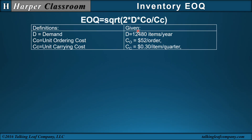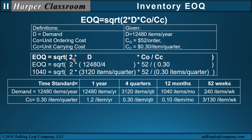For the EOQ equation, suppose we're given a demand of 12,480 items a year, an ordering cost of $52 per order, and a carrying cost of $0.30 per item per quarter. In the EOQ equation we have 2 times D times C sub O over C sub C. Notice our demand is in years but our carrying cost is in quarters — these two time units must be the same, so we transform years to quarters by dividing by 4. Taking 12,480 divided by 4 gives items per quarter. With ordering cost of $52 and carrying cost of $0.30 per item per quarter, the EOQ is 1,040.